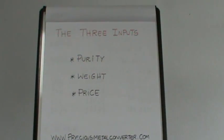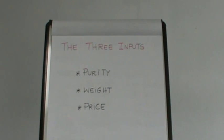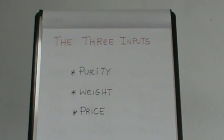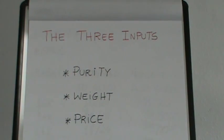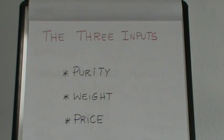When valuing your gold or silver, there's three main inputs that you're going to be using. The first will be the purity of that item. The second is the weight of that item. And the third will be the price of gold or silver on the day that you're going to be doing your calculations.